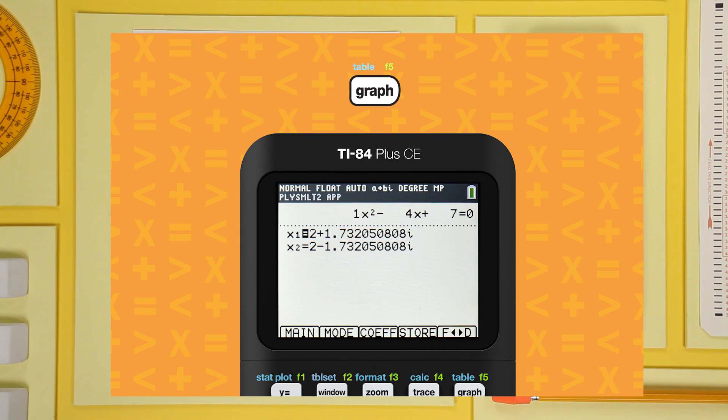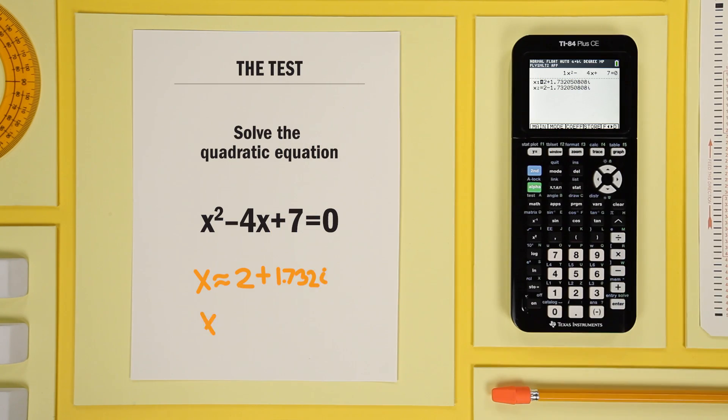Notice the solutions are complex numbers and the coefficient of i is irrational, so the solutions can't be converted to fractions. Fantastic!